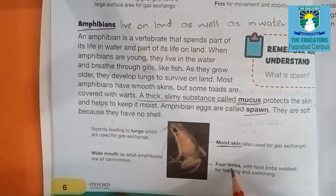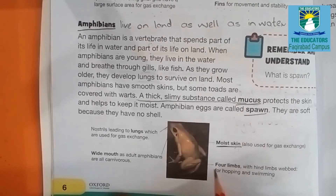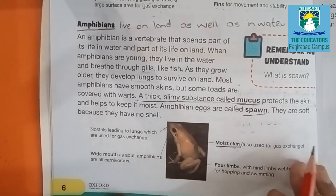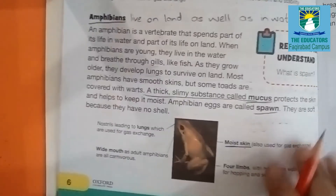Amphibians have four limbs with hind limbs that are webbed for hopping and swimming. These four limbs help in hopping and also help in swimming. Now come to the next page, page number 7.